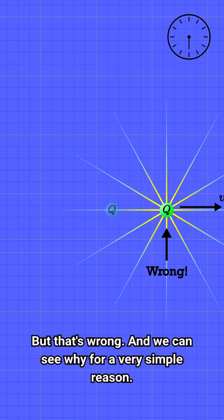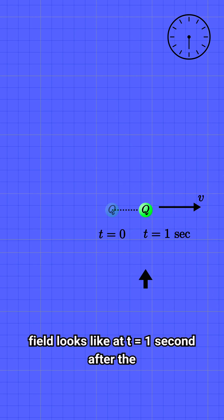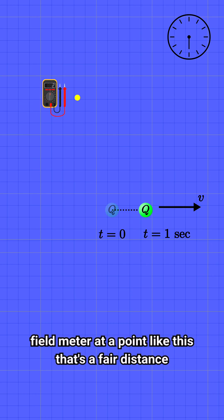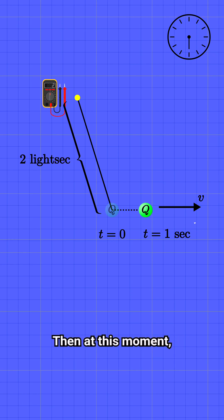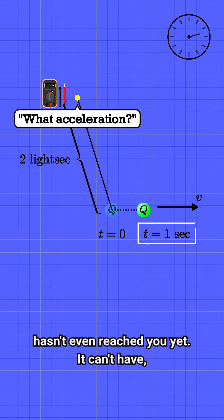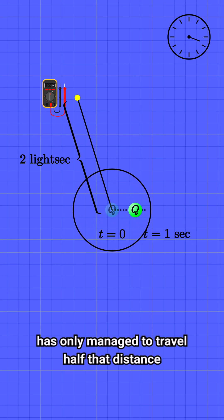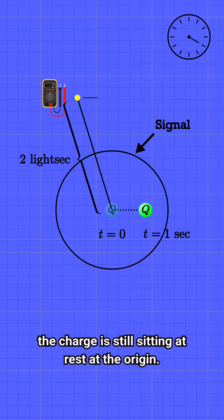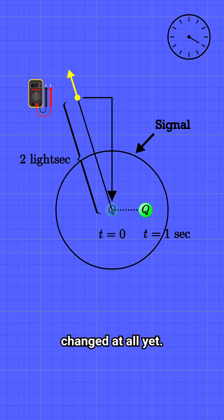But that's wrong, and we can see why for a very simple reason. Suppose we go to draw what the field looks like at t equals one second after the initial kick. Picture yourself standing with your electric field meter at a point that's a fair distance away from the origin — let's say it's two light seconds away. Then at this moment, the news that the particle has suddenly started moving hasn't even reached you yet. It can't have, because a light signal emitted from the origin has only managed to travel half that distance in the intervening second. As far as you know from so far away, the charge is still sitting at rest at the origin, and the electric field that you measure can't have changed at all yet.